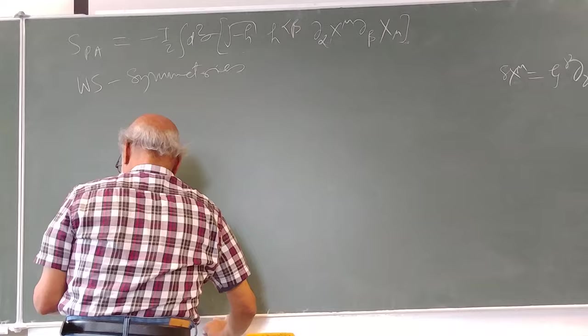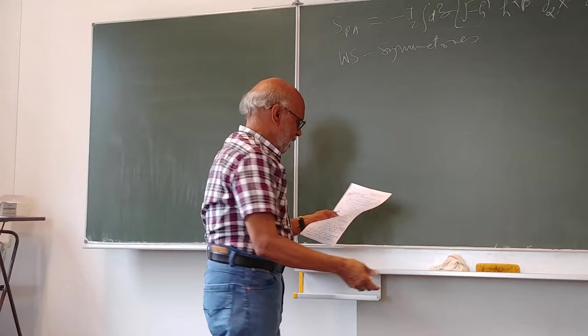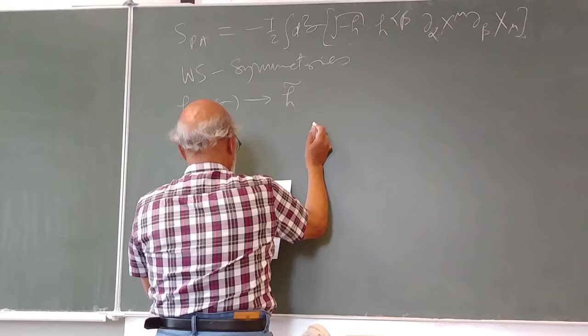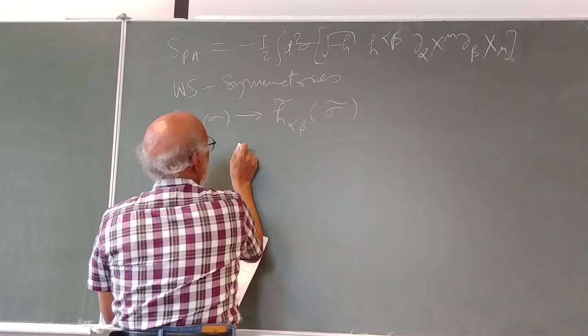Now let us have a look at what happens to the h_αβ. h_αβ should transform as a second rank tensor. So h_αβ is a function of σ, h̃_αβ(σ̃), and now this should transform as a second rank tensor.